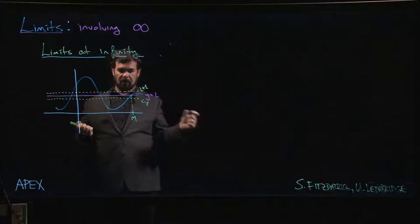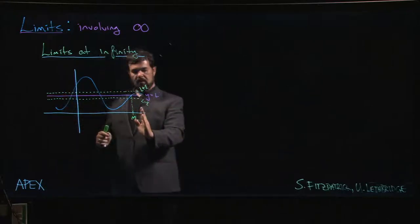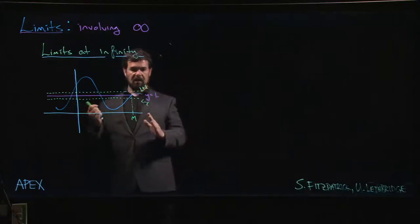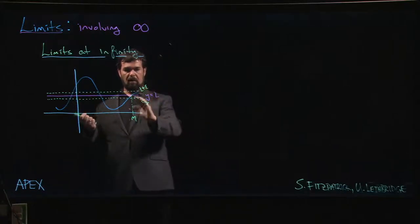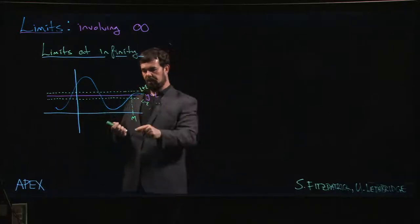And the usual story with limits, if somebody takes a smaller epsilon, they shrink this band, well, then I just have to go a little bit further out. So having a limit at infinity means that no matter how small we make epsilon, if I go far enough out, I can eventually get within that band.